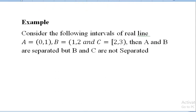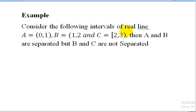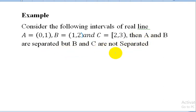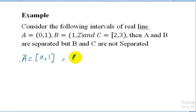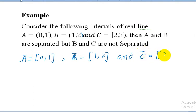For example, consider the following intervals on the real line: A equals open interval (0,1), B equals open interval (1,2), and C equals half-closed interval [2,3). Then A and B are separated but B and C are not separated. First we find the closures: A-closure equals closed interval [0,1], B-closure equals closed interval [1,2], and C-closure equals closed interval [2,3].